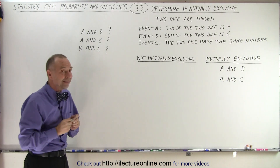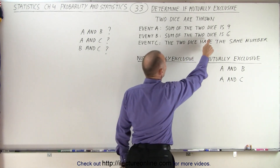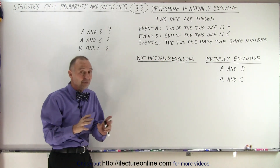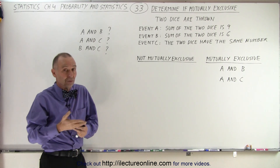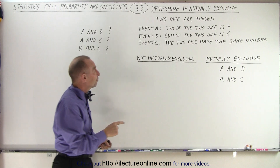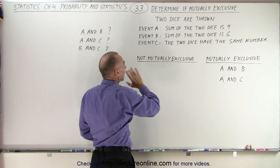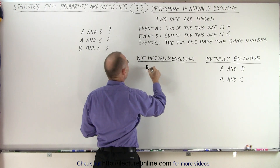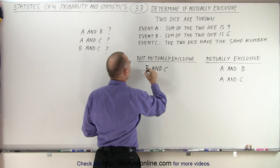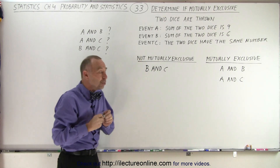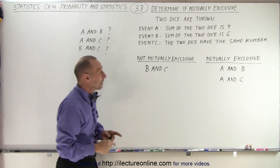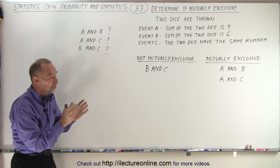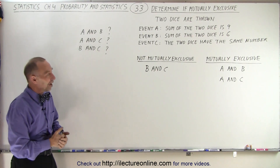What about B and C? Event B is that the sum of the two dice is six, and event C is that the two dice have the same number. Six is an even number, so that means it is possible — three plus three, they're the same number and do add up to six. So we can have event B and event C happen at the same time, meaning they're not mutually exclusive. It's kind of counterintuitive: not mutually exclusive means they can happen at the same time, mutually exclusive means they cannot. That is how it's done.